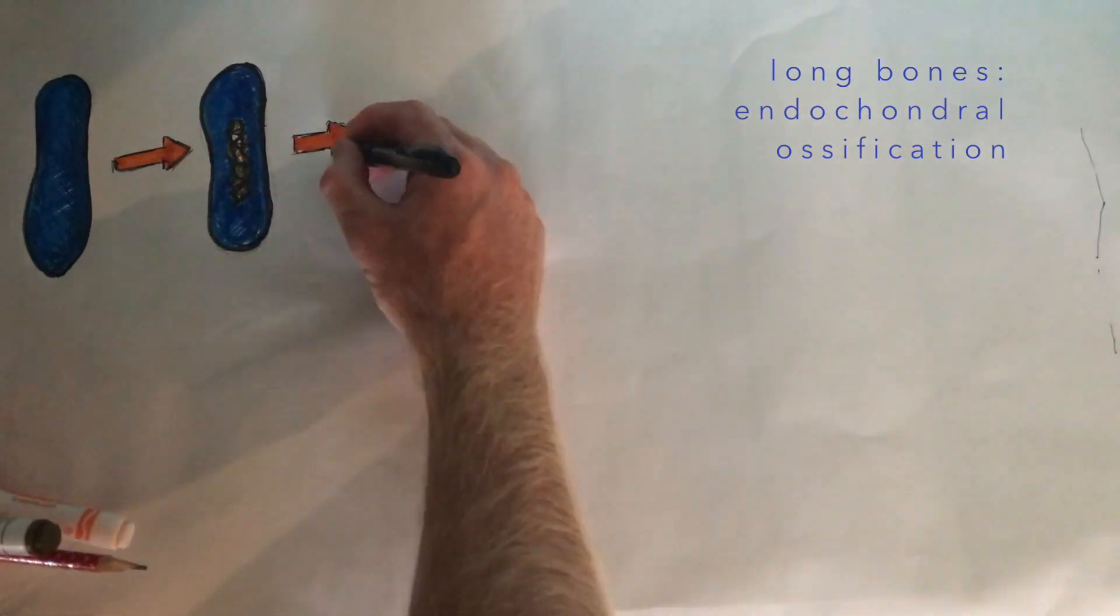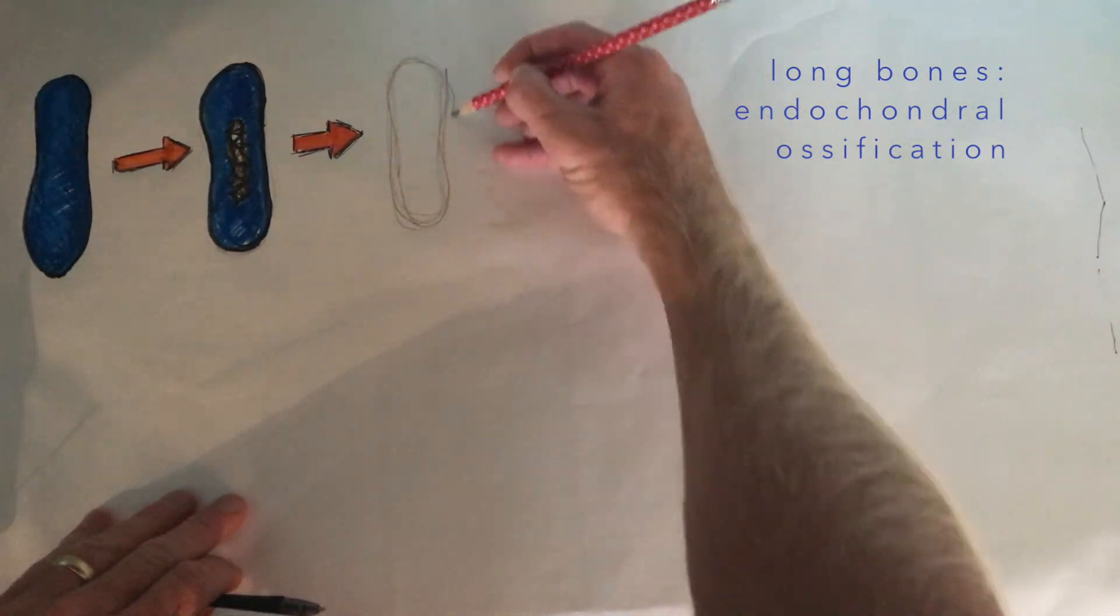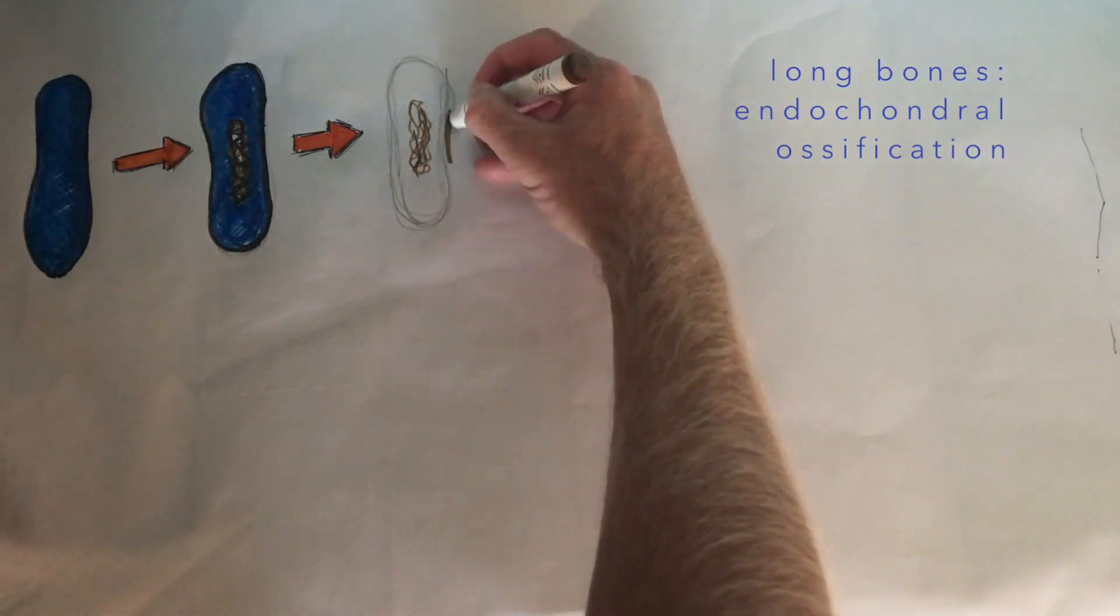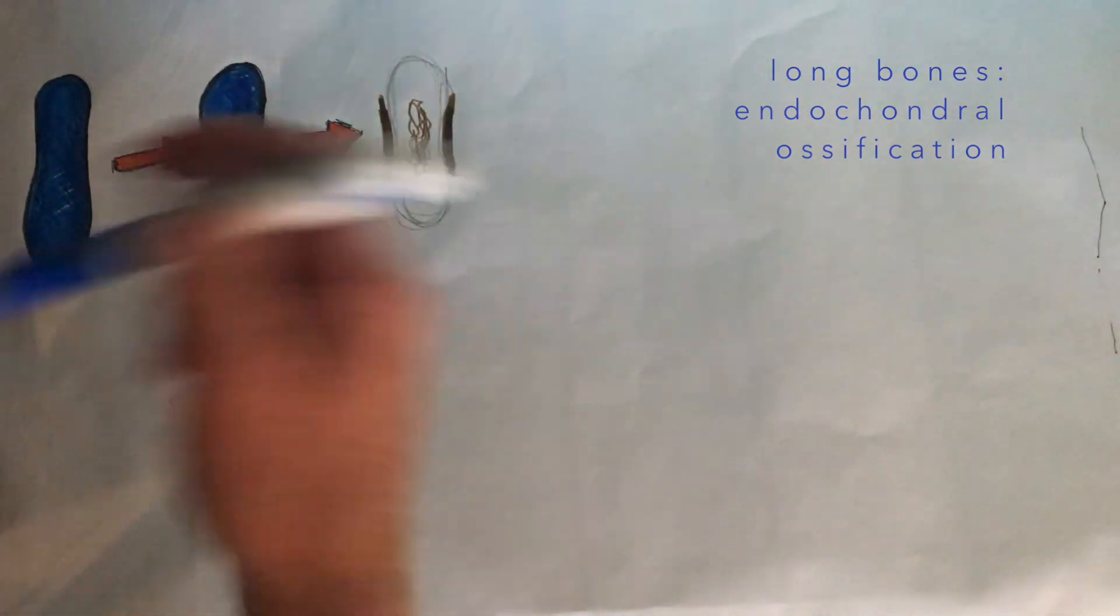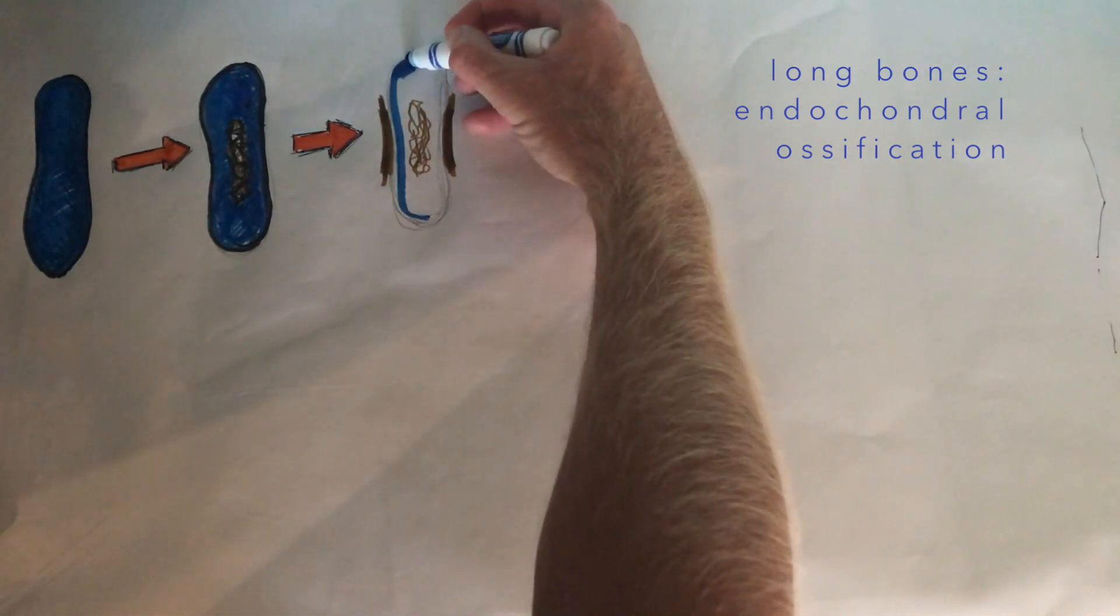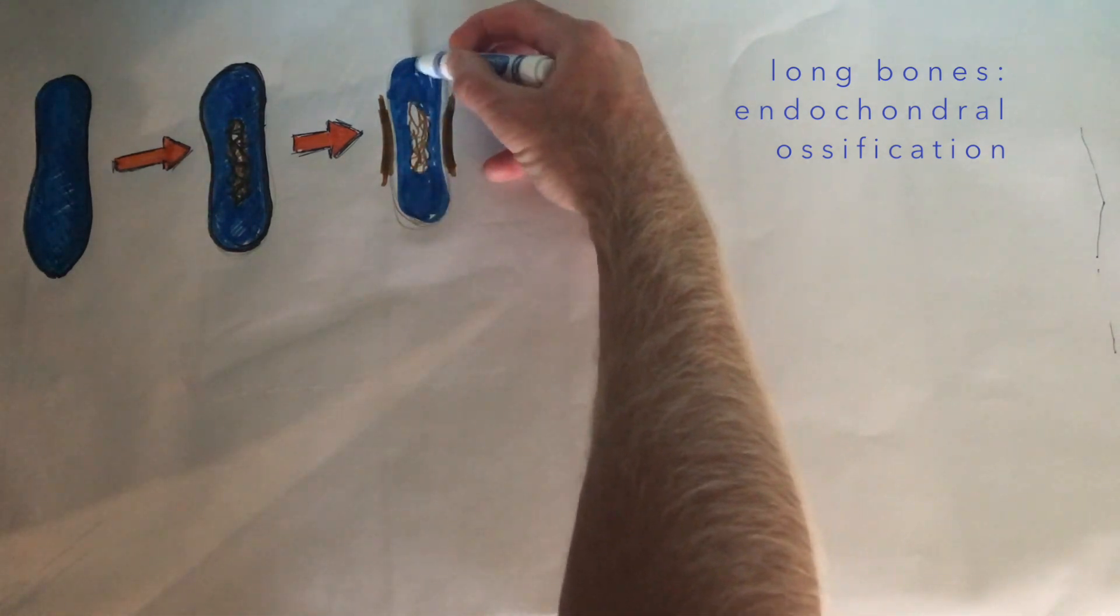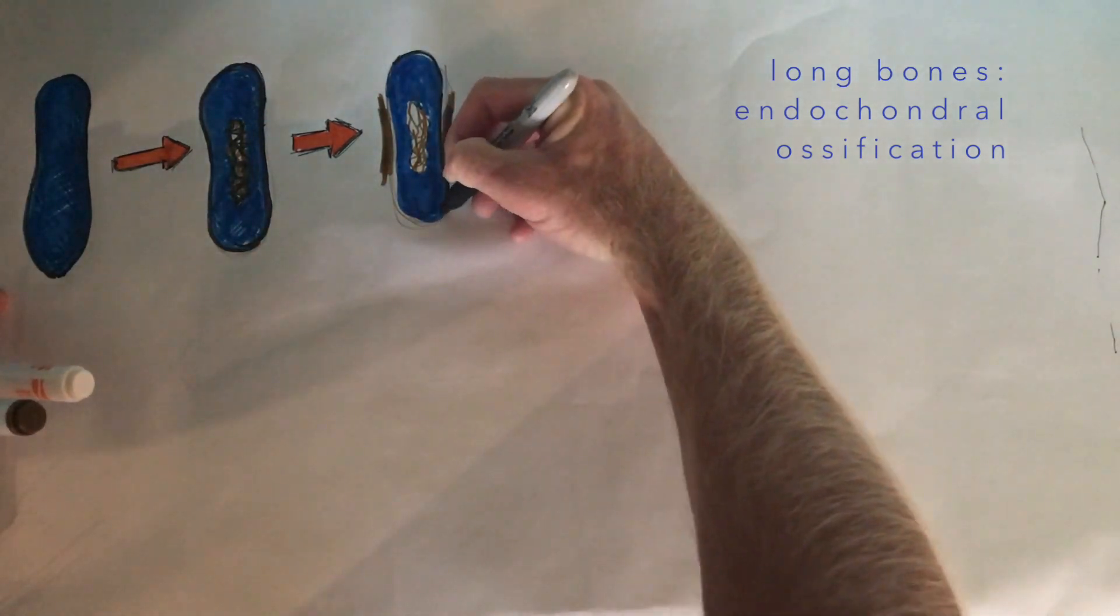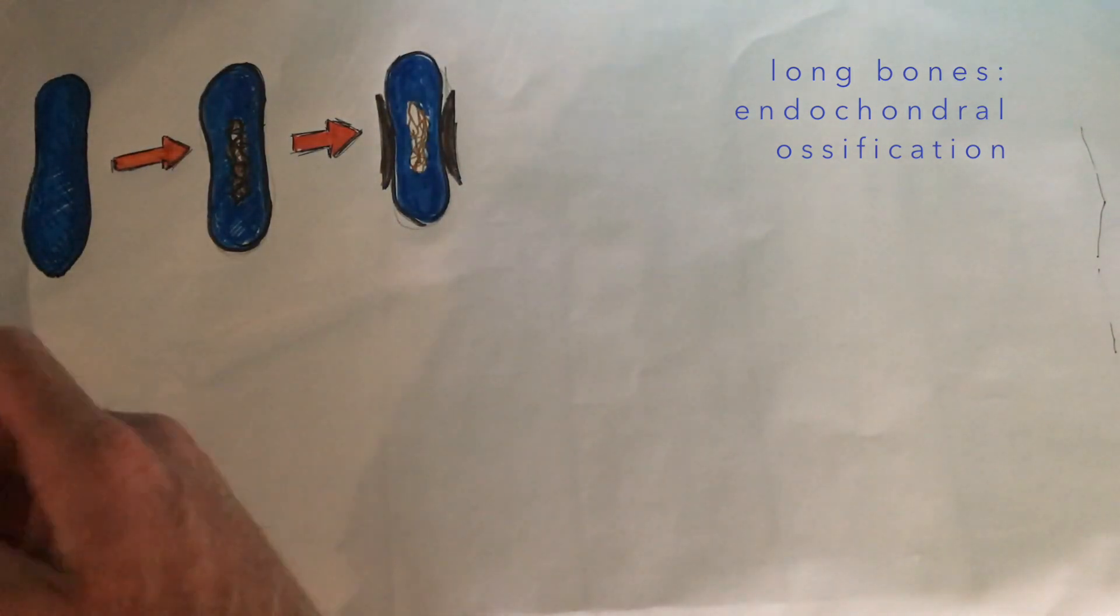The second thing that happens is that a bone collar forms. This occurs a little bit later in fetal development. Osteoblasts lay down this sheath of bone tissue around the diaphysis of the hyaline cartilage model. It's almost like a little sheath of hardened bone tissue that starts to form around the outside of the long bone.